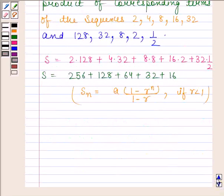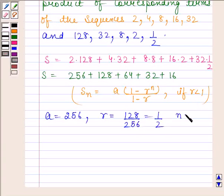Now, here, a, that is, first term is equal to 256, r, that is, common ratio is equal to 128/256 and this is equal to 1/2, and n is equal to 5, that is, number of terms.